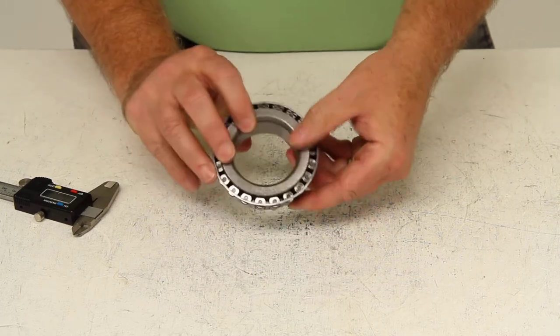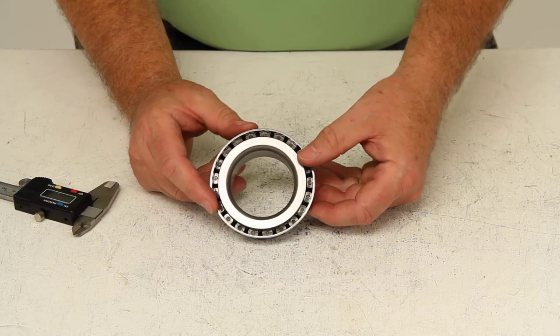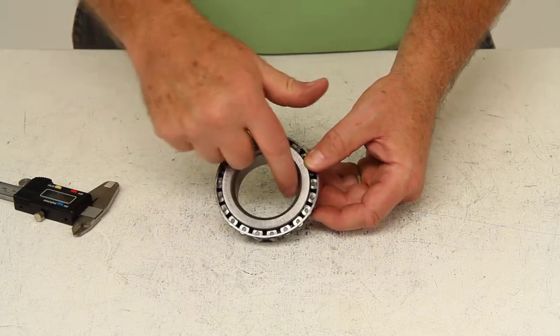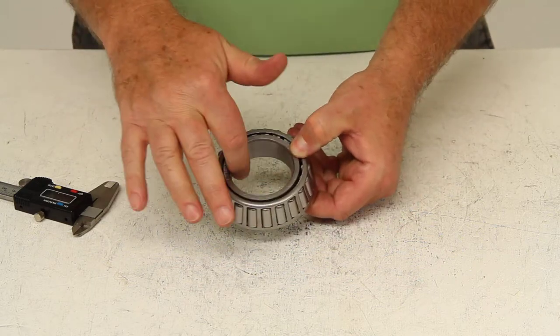The other way, if you can't get the part number off the wheel bearing, you can measure the inner diameter. That is the most critical measurement on a wheel bearing.